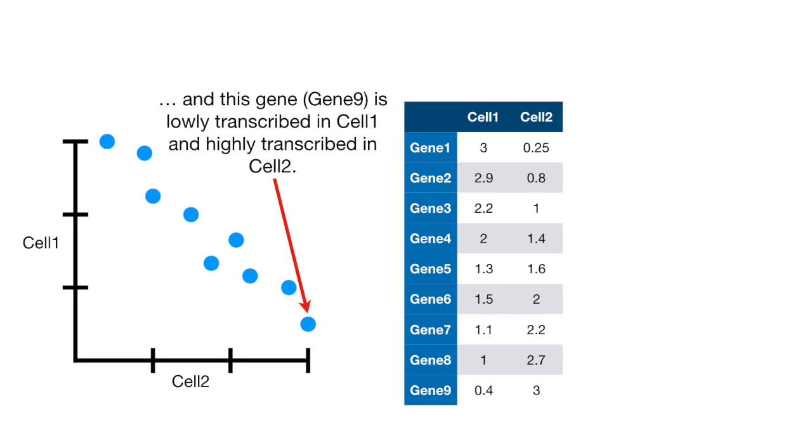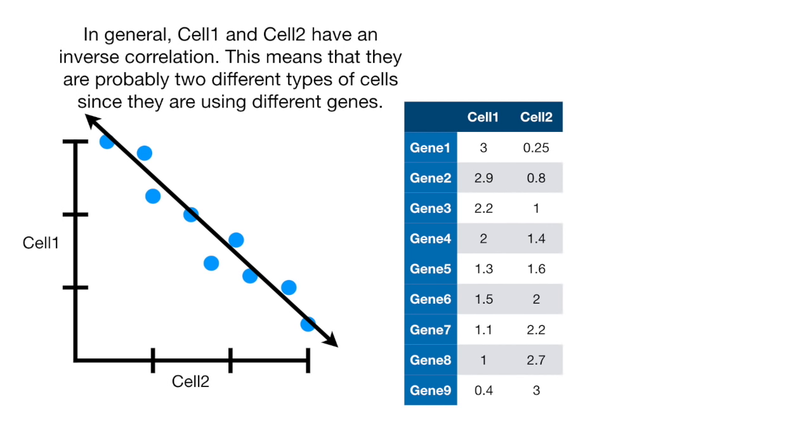And this gene, gene 9, is lowly transcribed in cell 1 and highly transcribed in cell 2. In general, cell 1 and cell 2 have an inverse correlation. This means that they are probably two different types of cells since they are using different genes.